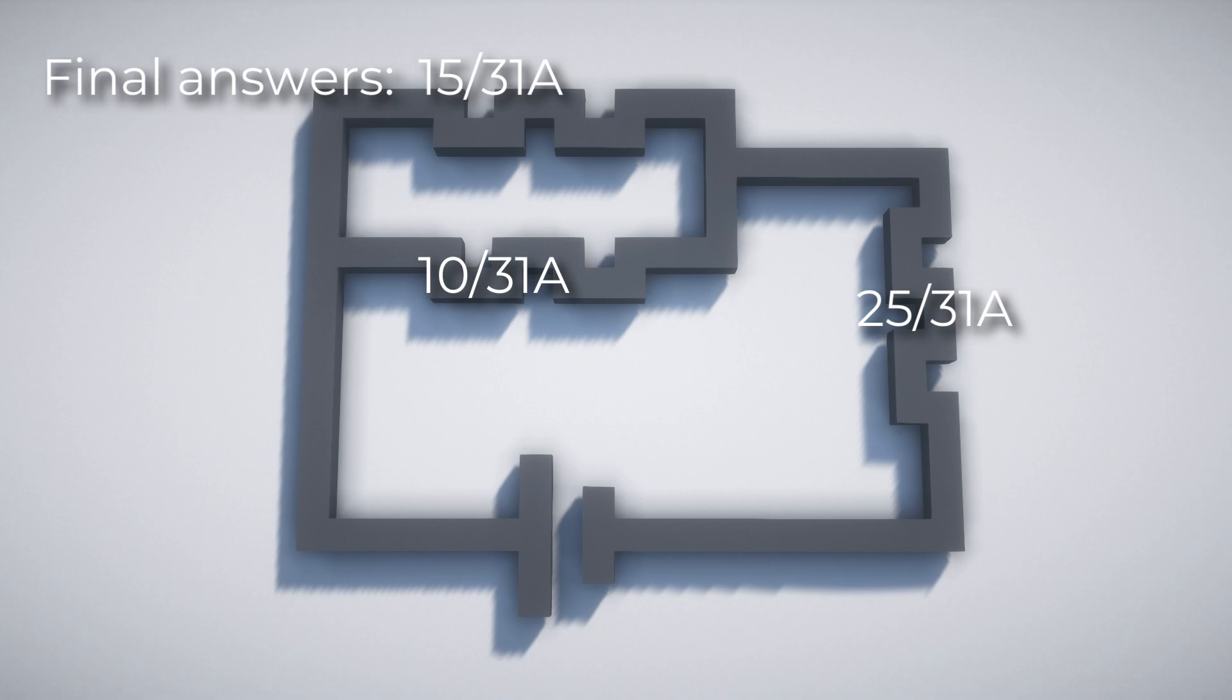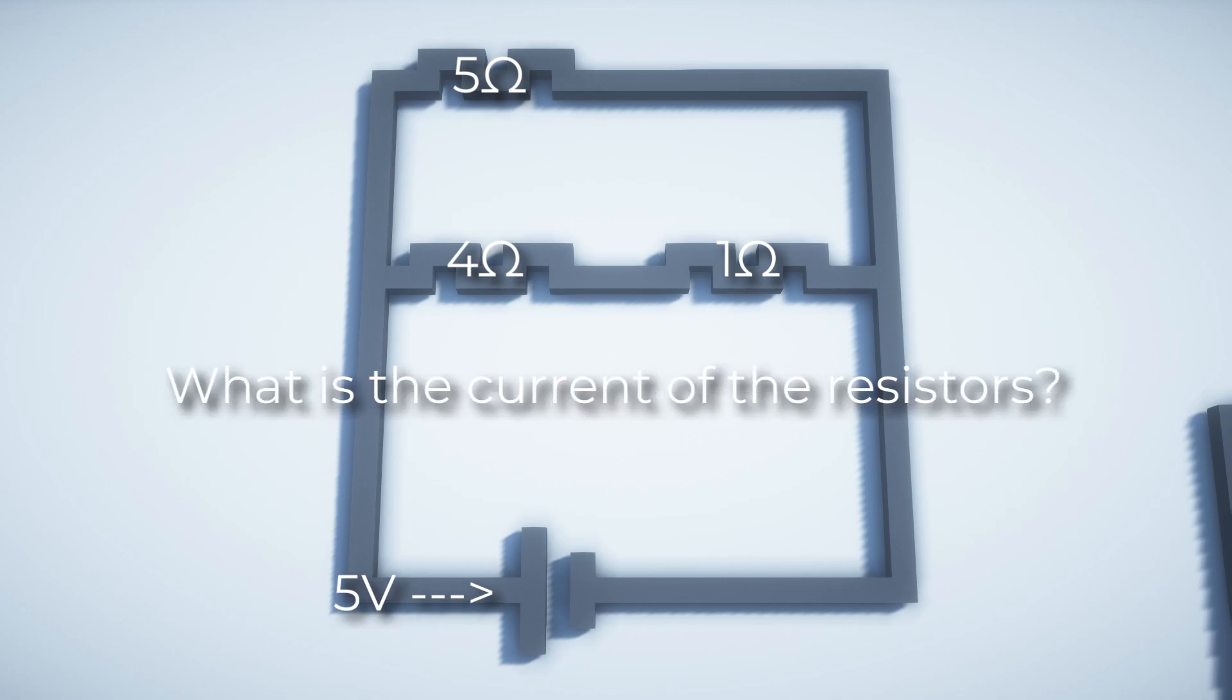So now we've actually solved our first combination circuit. Now for the last example, let's look at a combination circuit in the other way. Instead of the parallel circuit being inside of the series, now the series is inside of the parallel. The three resistor values are going to be 5 ohms, 4 ohms, and 1 ohm in this kind of format, in this formation. The battery is a 5 volt battery, and the question asks what the current of the resistors are.